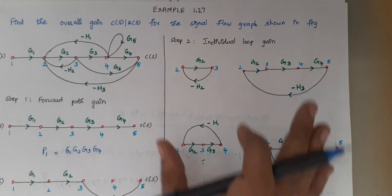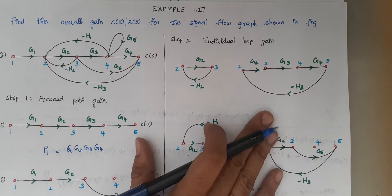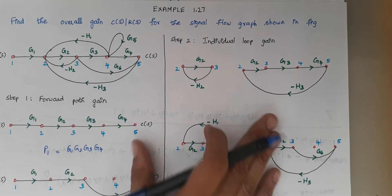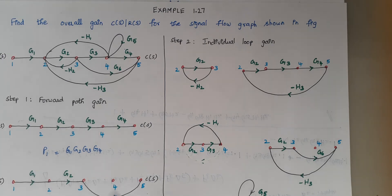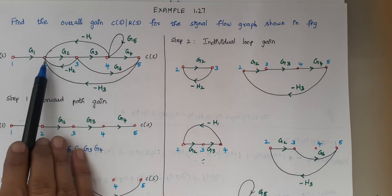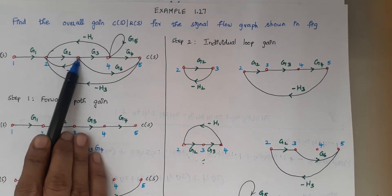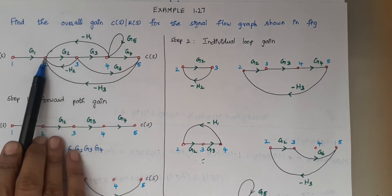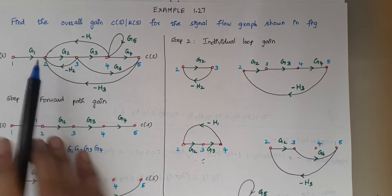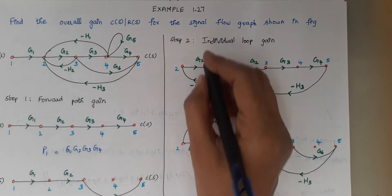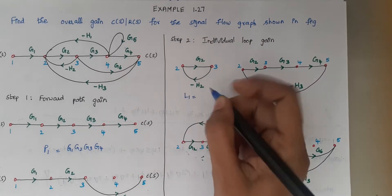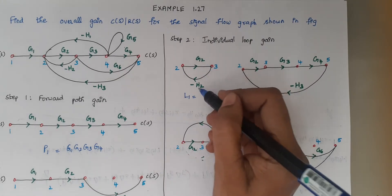Step 2 is calculating the individual loop gain. An individual loop starts at a node and ends at the same node. From the diagram, between nodes 2 and 3: it starts at 2, moves to 3, and comes back to 2. This is loop 1, and its loop gain is G2 × (−H2), written as −G2H2.